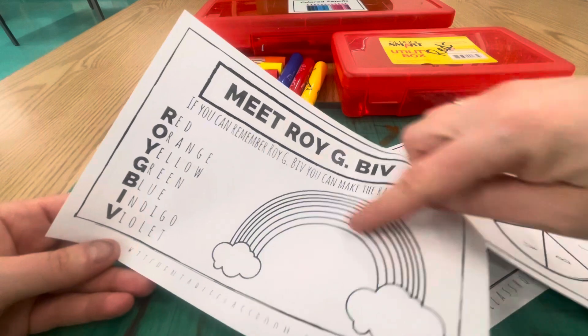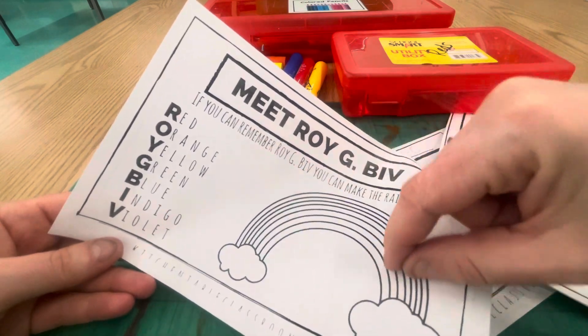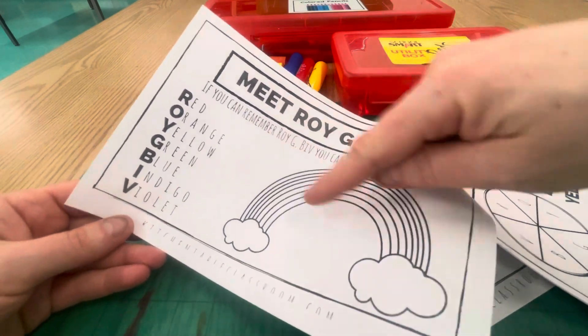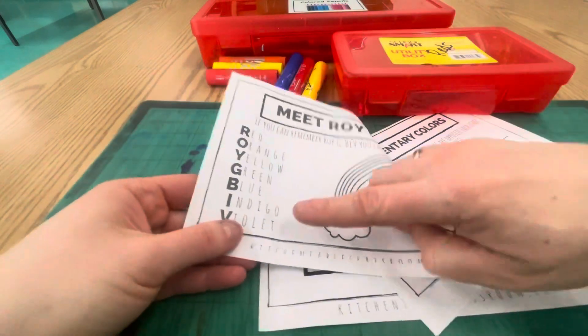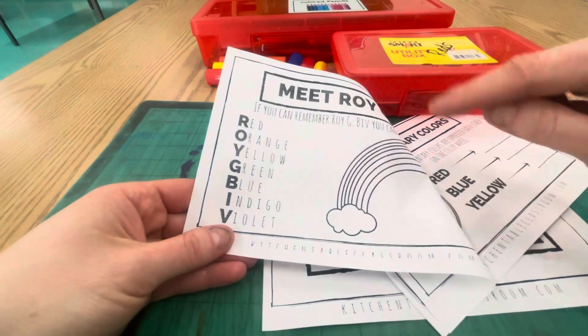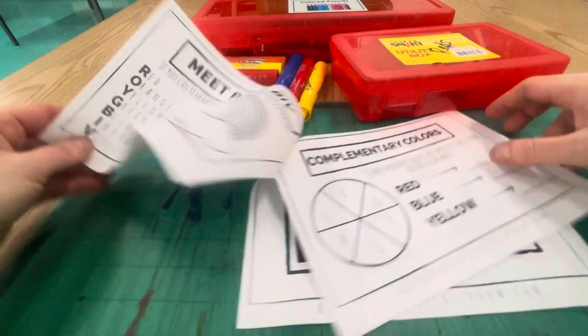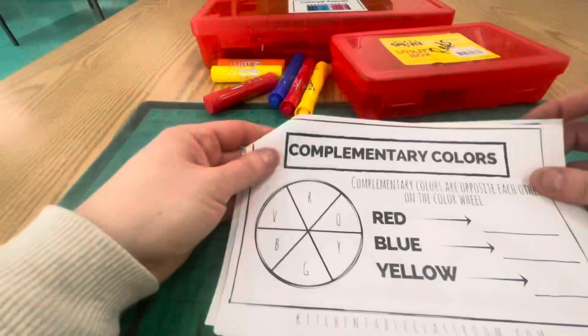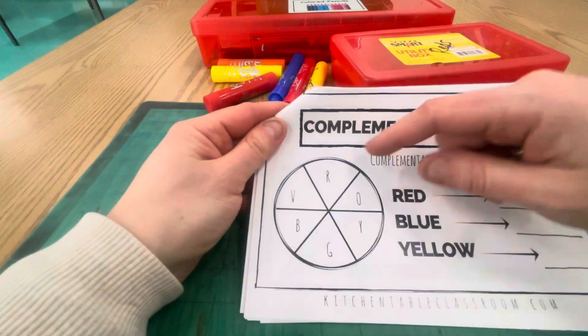You can skip over this rainbow part right now. This is really thin. If you want to use colored pencils to get in there you can. I don't have any that aren't specifically labeled indigo, but you could use like a lighter blue and a darker blue here. Go on to the complementary colors. Fill in the color wheel.